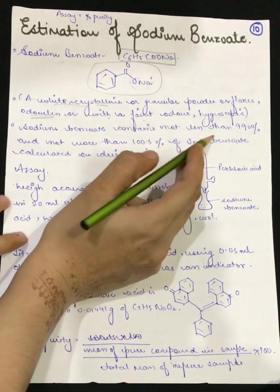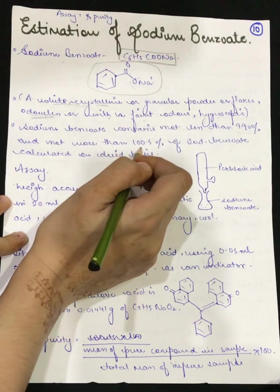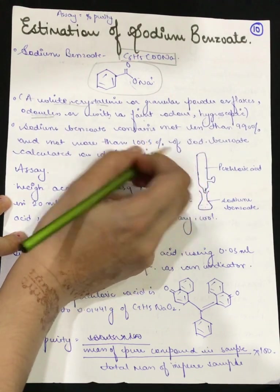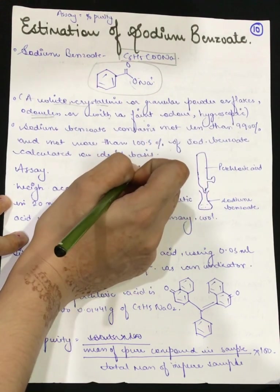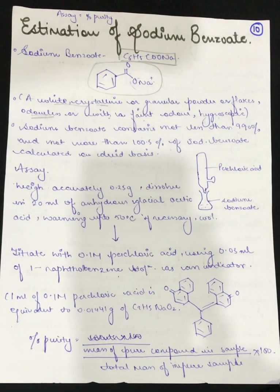Sodium benzoate contains not less than 99.0% and not more than 100.5% of sodium benzoate calculated on a dry basis. When we estimate sodium benzoate percentage purity, this is our preparation. Now let's see what is the method for the assay of sodium benzoate.